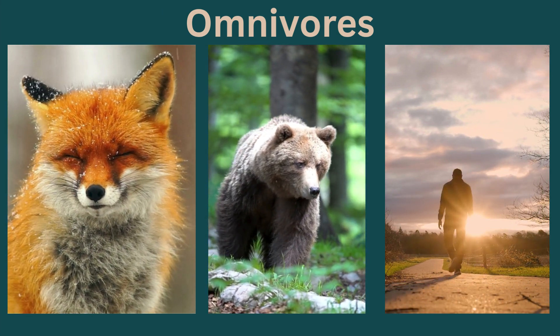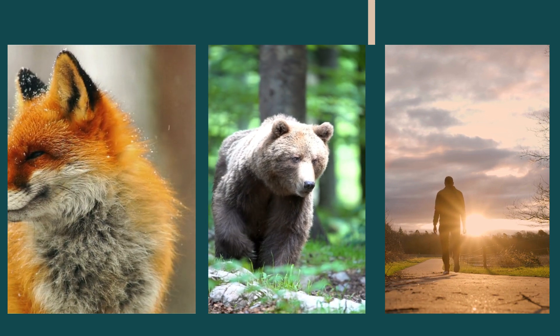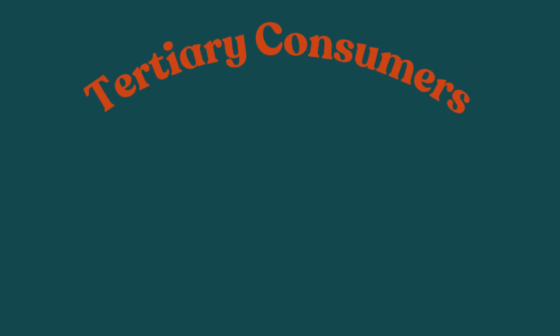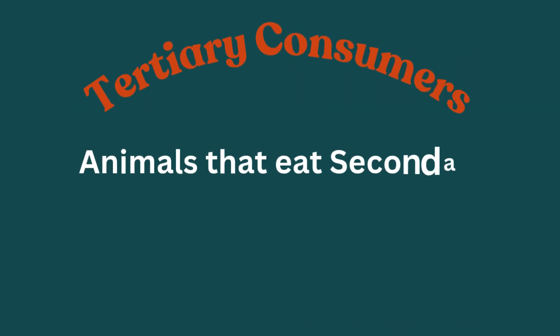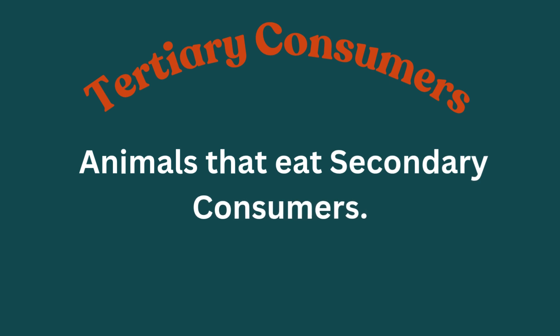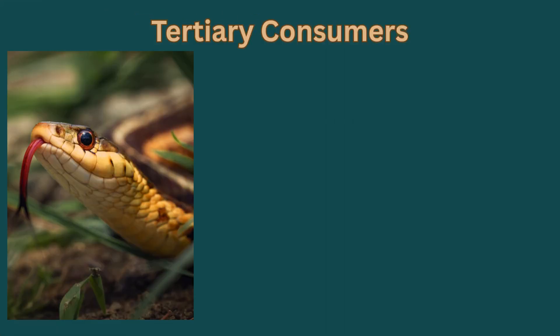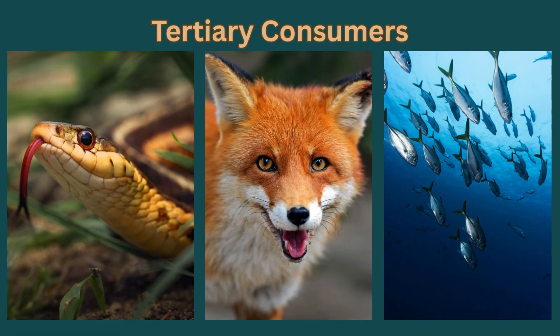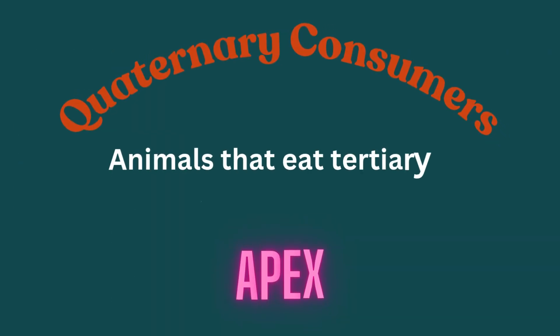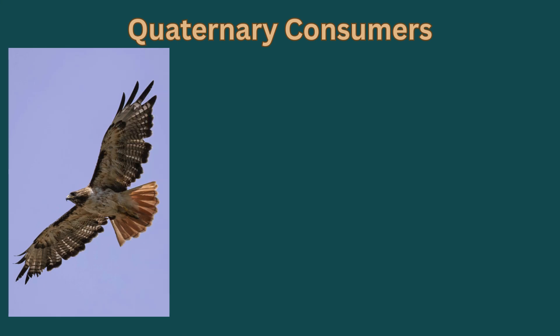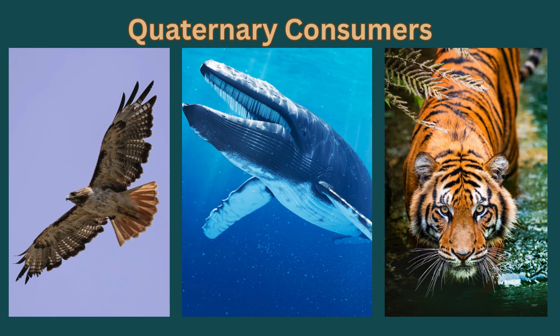Third, tertiary consumers: animals that eat secondary consumers, also called top carnivores. Examples are snake, fox, large fish, etc. Fourth, quaternary consumers: animals that eat tertiary consumers, also called apex predators. Examples can be hawk, killer whale, tiger, etc.